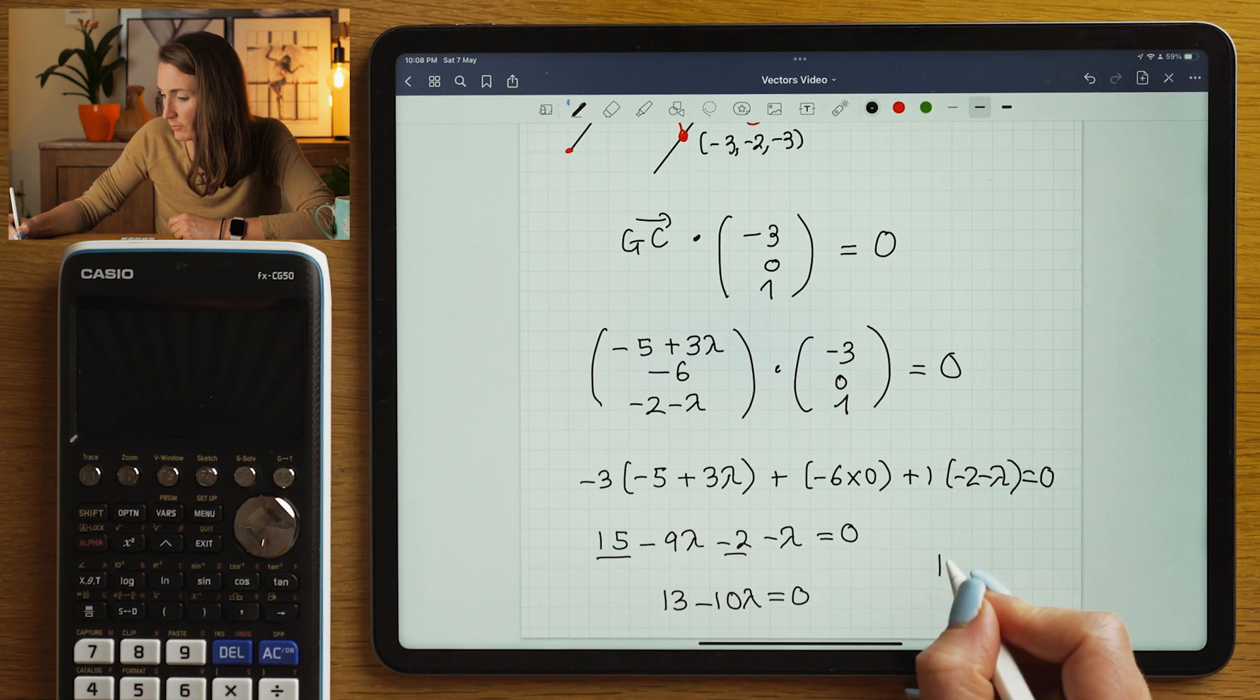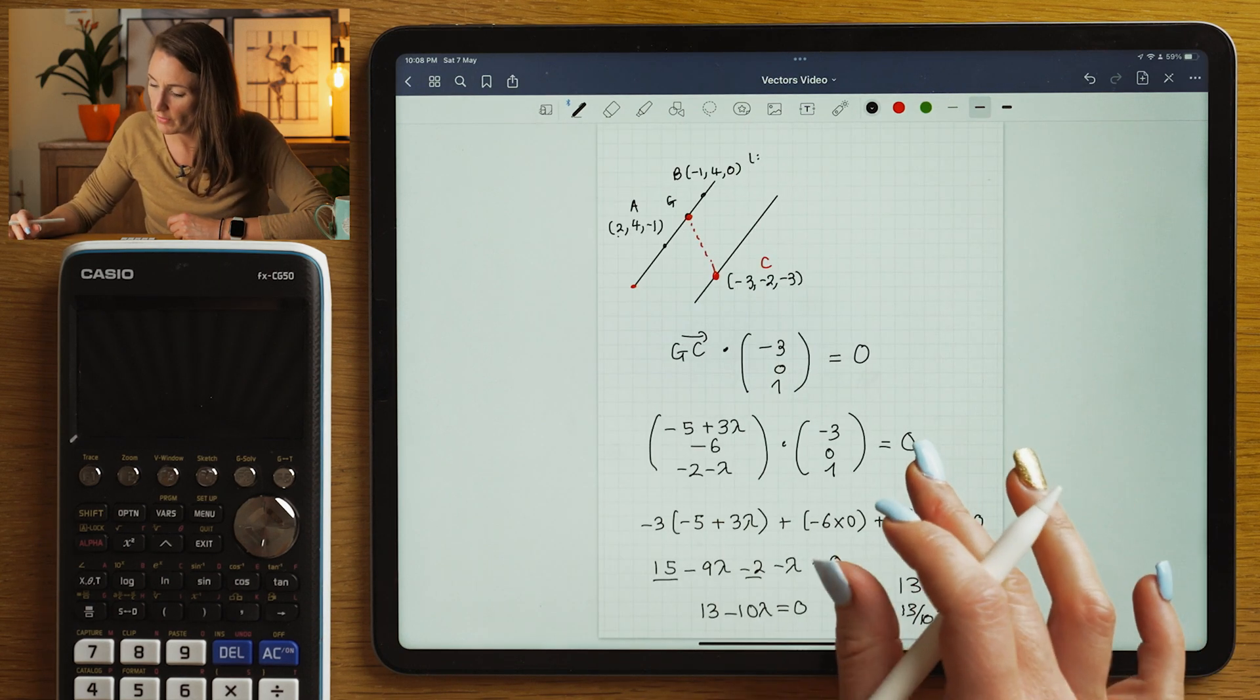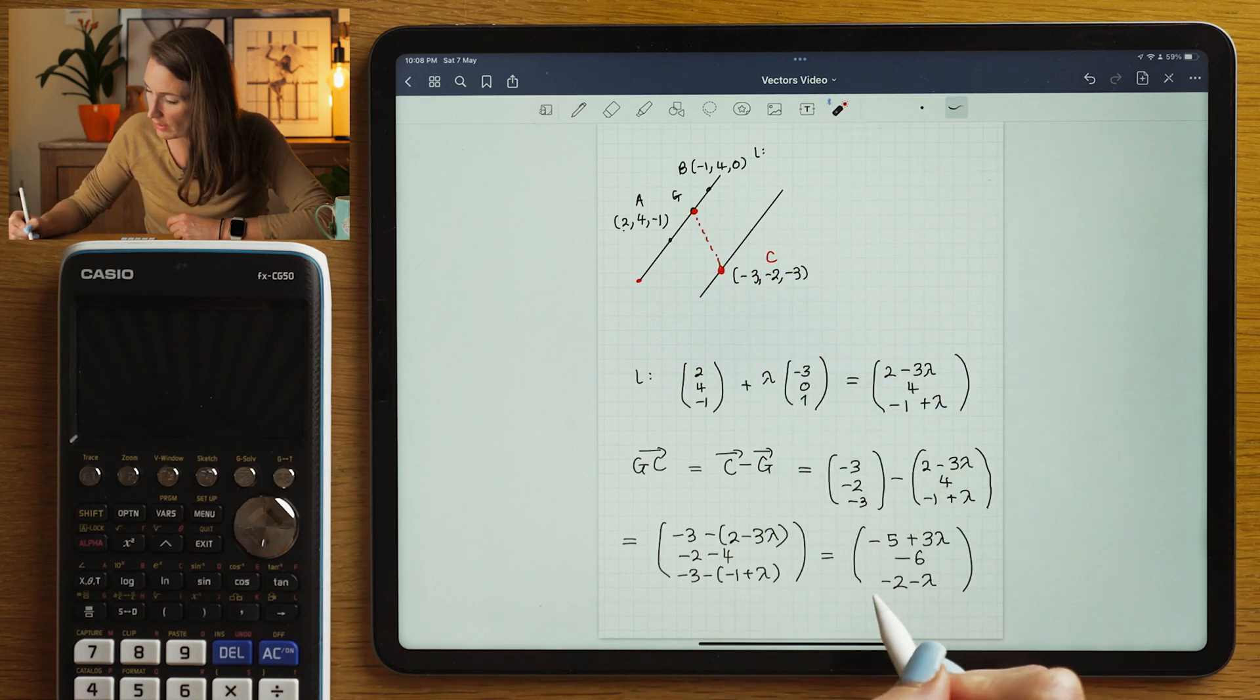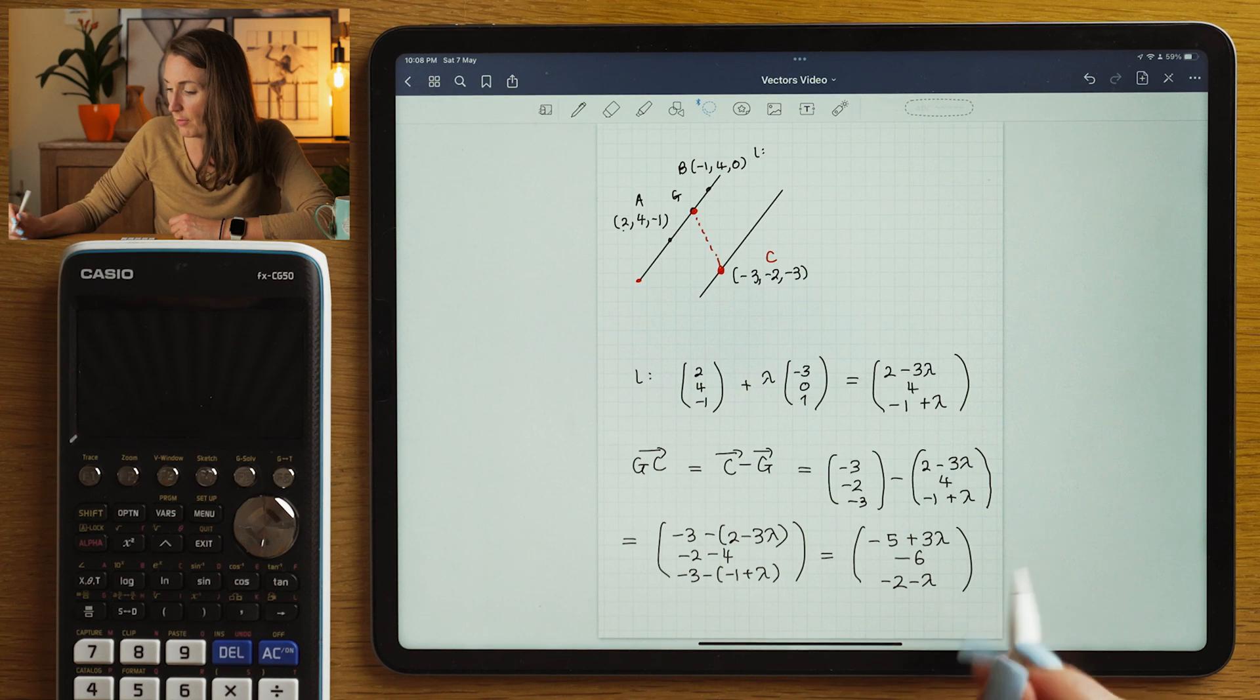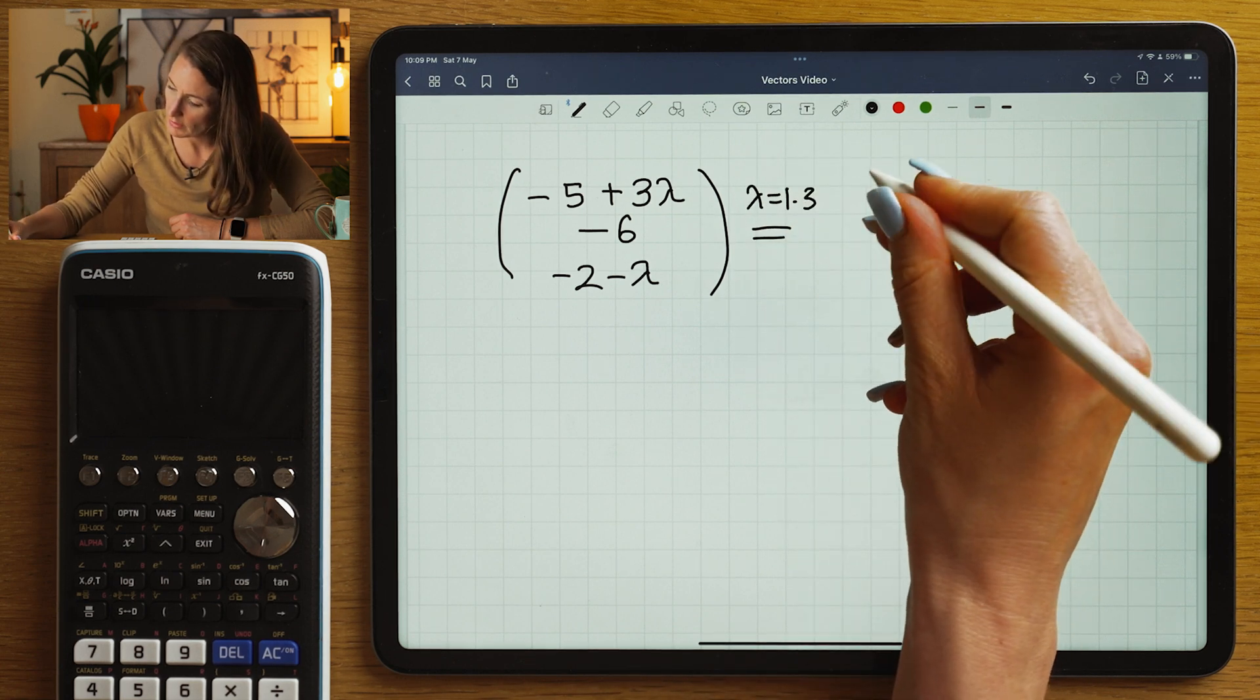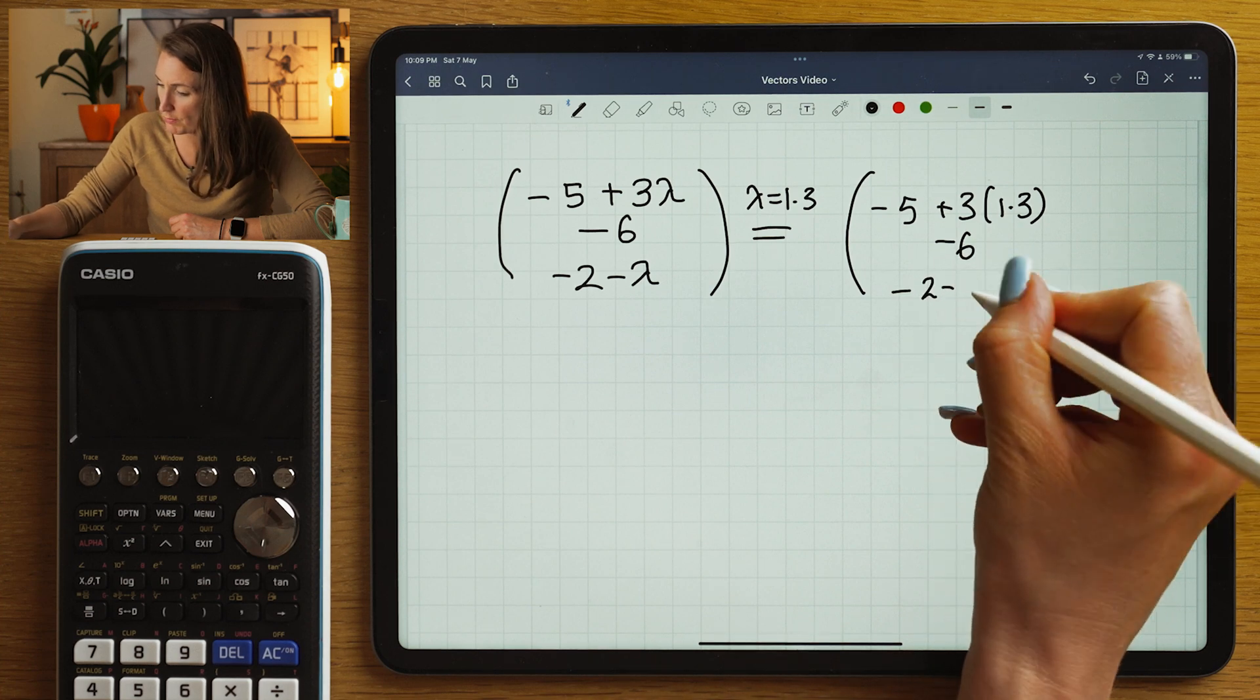and that's going to be minus 10λ equal to 0. So we know the specific value of lambda we're looking for is going to be 13 divided by 10, or lambda should be 1.3. Well, that's pretty cool, guys, because what we know now is the vector that goes across such that it's perpendicular is this vector here, but with lambda equal to 1.3. So all we need to do now is substitute in lambda equals 1.3, and we're going to get -5 plus 3 times 1.3. We're going to get -6 and -2 minus 1.3.